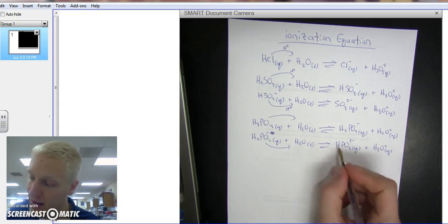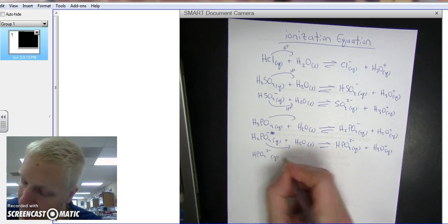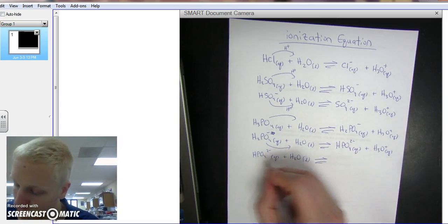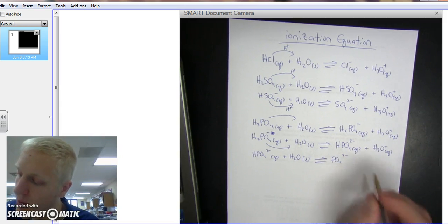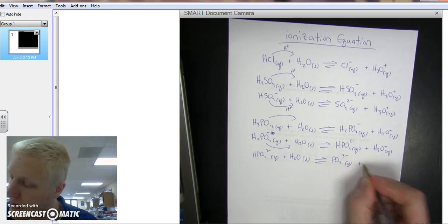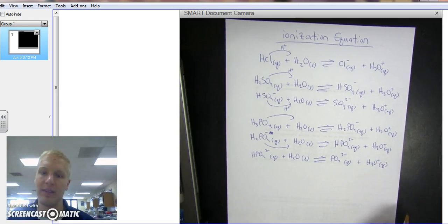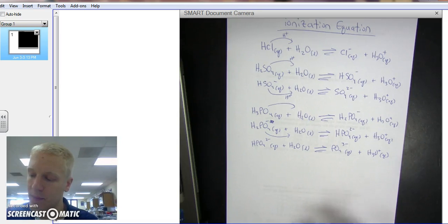And the last one is HPO4 two minus aqueous, plus H2O liquid, reacts to form, it loses its last hydrogen, so it's PO4 now with three minus charge, this is aqueous, plus H3O+, aqueous. And those are the three ionization equations for this triprotic acid, phosphoric acid.